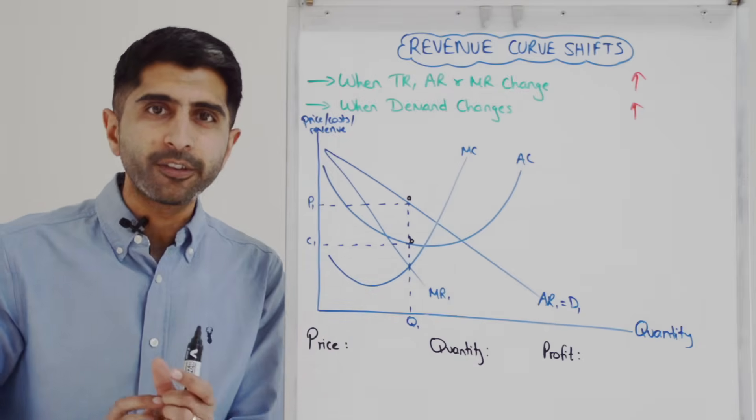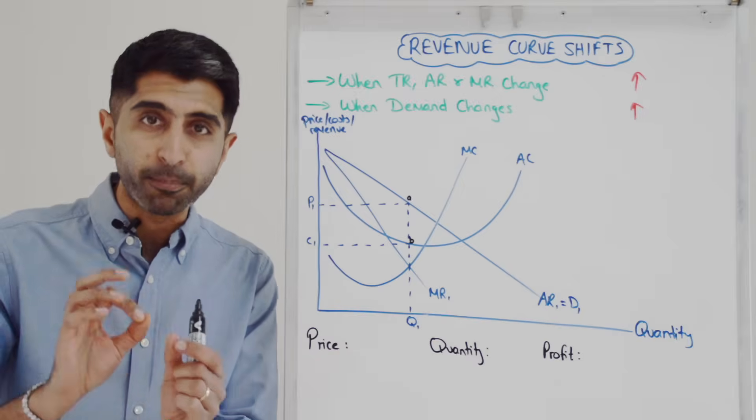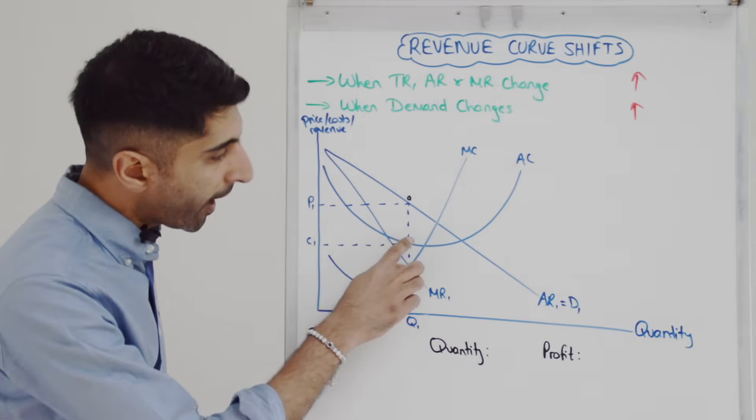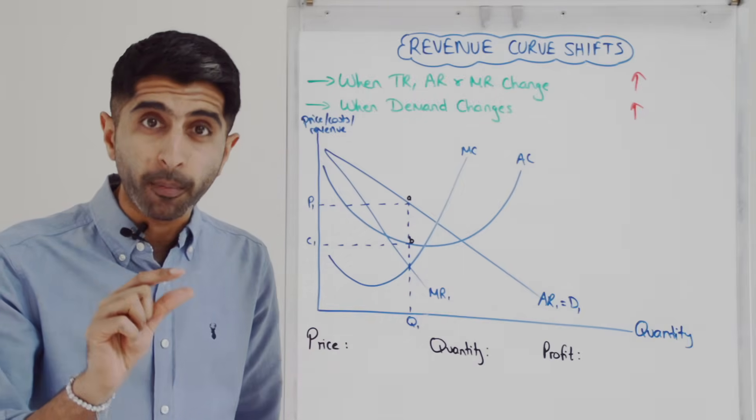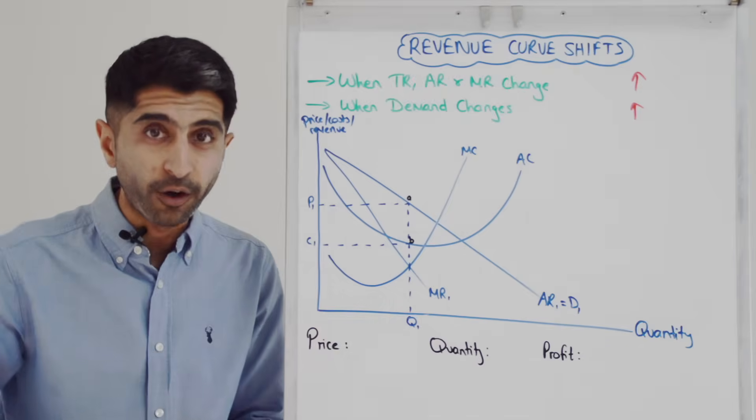At the profit max quantity, we compare AR and AC for the profit per unit. So A is AR, B is AC. So it's supernormal profit per unit multiplied by Q1 to get this box.